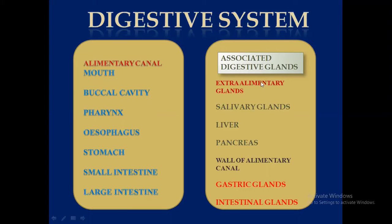Associated glands are also present. In these associated glands there are two types. One is extra-alimentary glands — glands which are not present in the alimentary canal but are present outside of it. Salivary glands, liver, and pancreas are these three extra-alimentary glands. The wall of the alimentary canal also consists of two types of glands: gastric glands and intestinal glands.